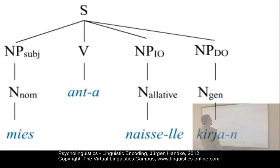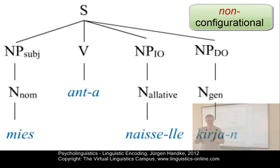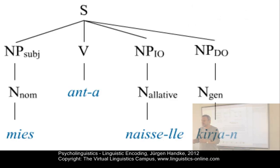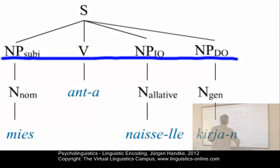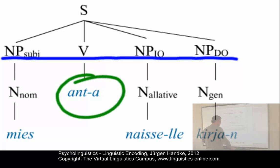Our next language is Finnish. Let's listen: 'Mies antaa naiselle kirjan.' This is the Finnish version of 'the man gives the woman the book.' In Finnish, like in Tagalog, we have a non-configurational language with a great deal of freedom in arranging its main functional elements, and once more a flat structure of functional elements when represented hierarchically. The grammatical functions — subject, verb, object, etc. — are expressed through case marking, at least for subject and object, and are not encoded in phrase structural configurations. Nevertheless, in Finnish, the verb normally occurs in the second position.